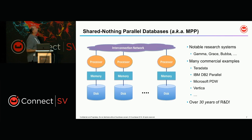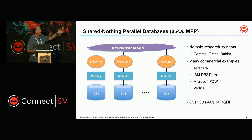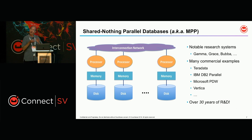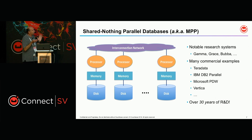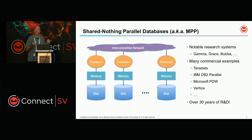This brings us to shared nothing parallel databases — the best practice for building parallel systems. Teradata, Microsoft's PDW, DB2 parallel — a whole bunch of systems are based on this architecture. As Couchbase folks, you're familiar with this from the front end. We have the same architecture on the analytics nodes of the cluster. There's 30 years of research and development in parallel databases that we've drawn on to apply best practices and algorithms to your JSON data.